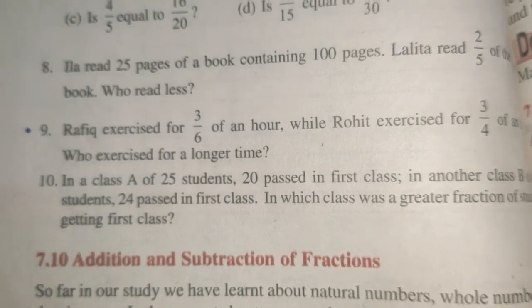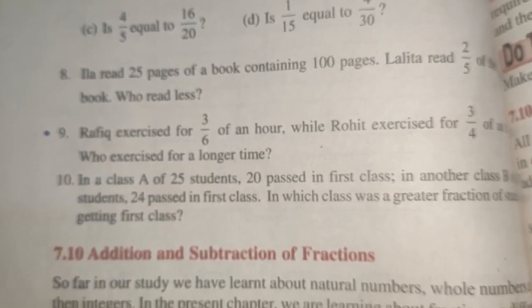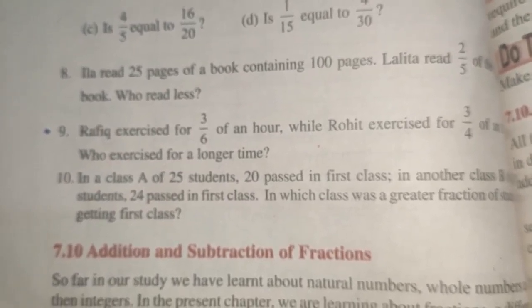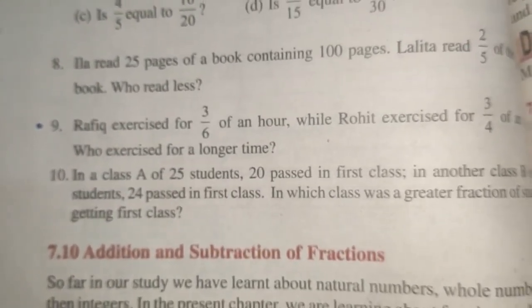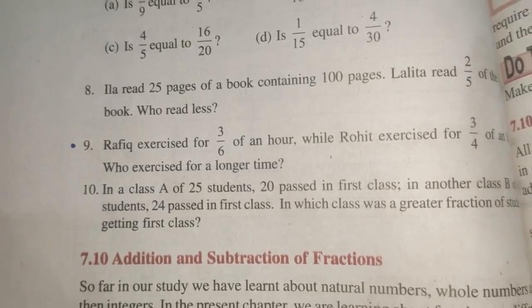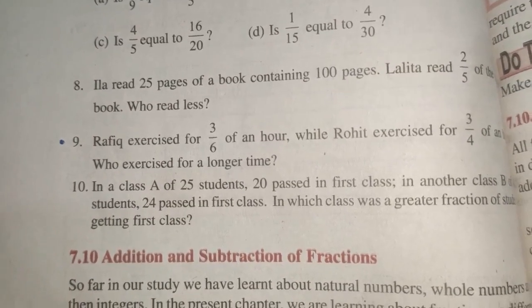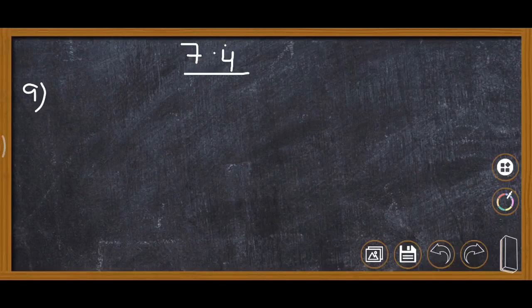Question Number 9: Rafiq exercises for 3 upon 6 of an hour and Rohit exercises for 3 upon 4 of an hour. We need to find who exercised for a longer time. Rafiq exercised for 3 upon 6 and Rohit exercised for 3 upon 4 of an hour.